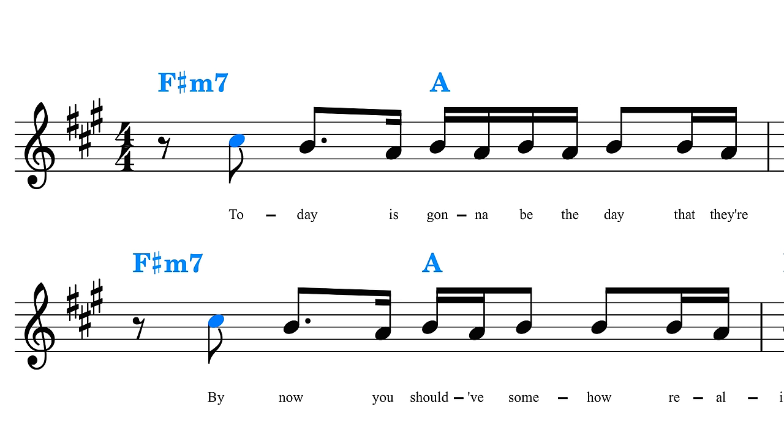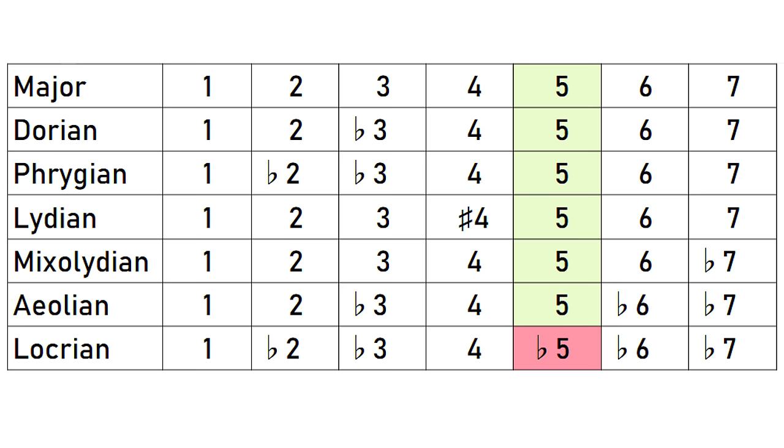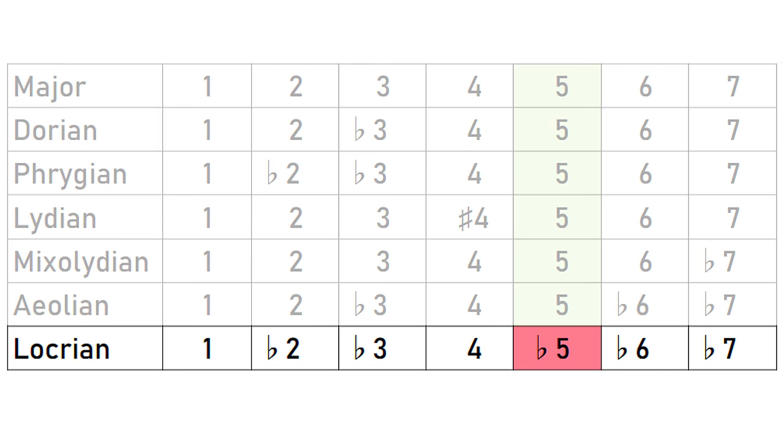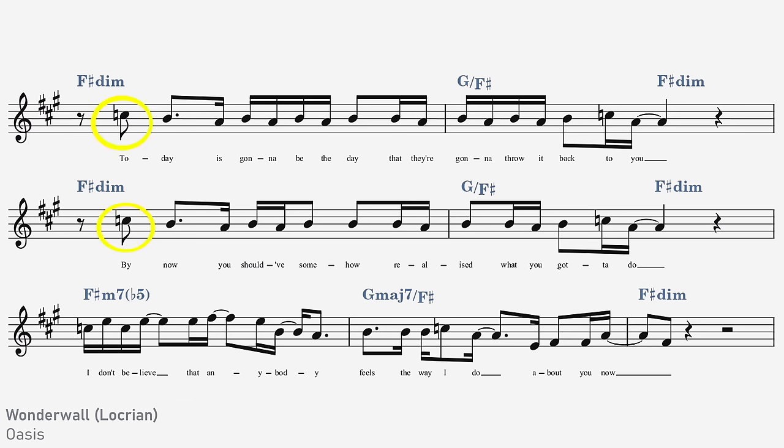Because all of the other modes have the regular fifth degree, not a flat fifth. But here with the Locrian mode, we actually do want that lowered fifth. So here I've been able to keep the original note that Liam actually sings there. Now later in the melody, he does sing fifth degrees again, and this time he does sing them as the proper fifth degree, so I've had to lower those.